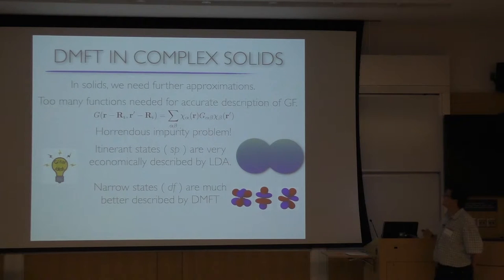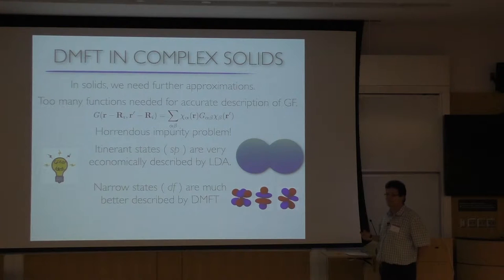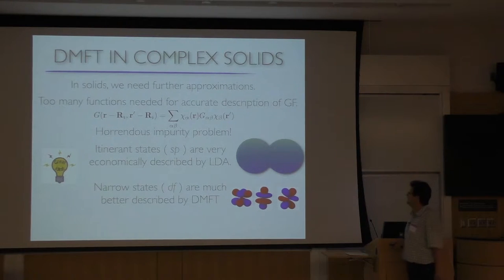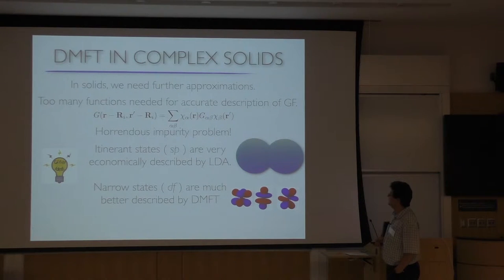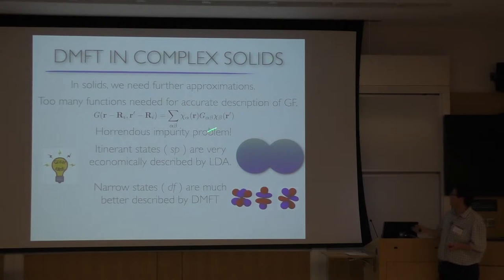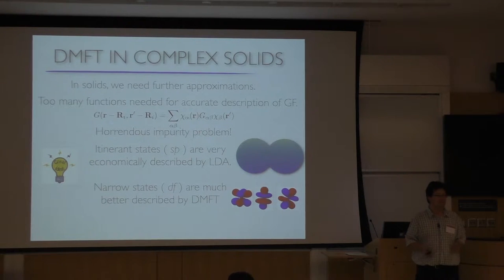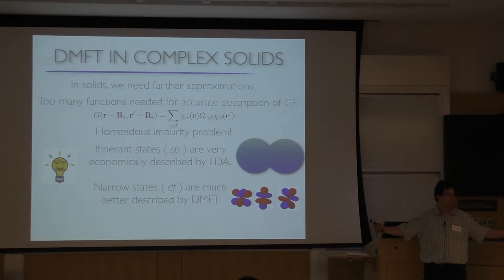Unfortunately, in solids we need further approximations because there are many degrees of freedom. We want to concentrate on treating well those degrees of freedom we can solve with our quantum impurity. We write the Green's function in some discrete set of states, but only for those states which are reasonably localized — such as d states or f states on transition metal or f-element ions. We don't do that for s electrons, because s electrons don't live in a sphere. Importantly, non-correlated localized s states can be integrated out when we do the DMFT problem.